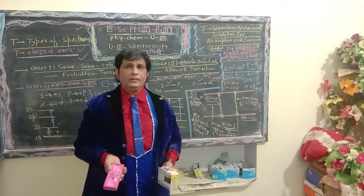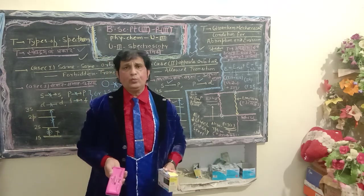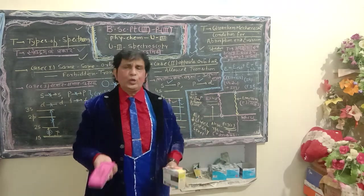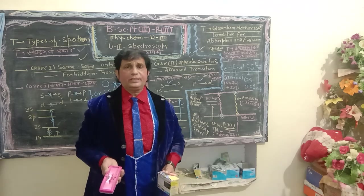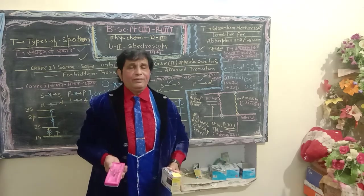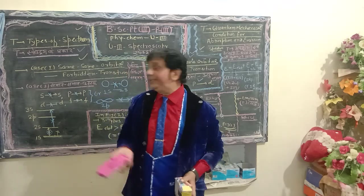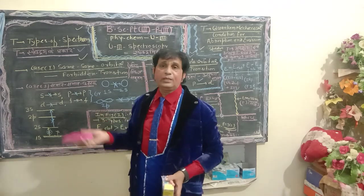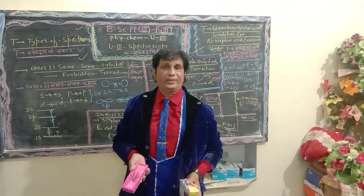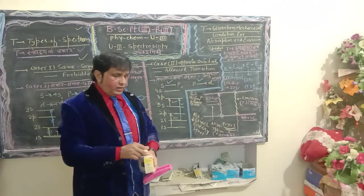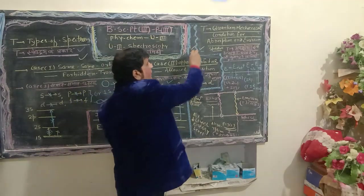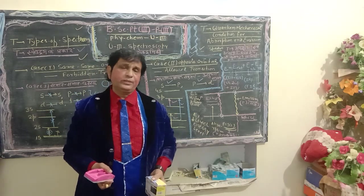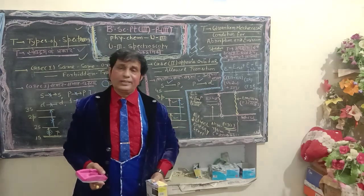Today we are discussing the selection rule for linear spectrum and molecular spectrum. Molecular spectra are also known as band spectra. A linear spectrum is produced by atomic species present in the gas or vapor phase, whereas molecular spectrum is produced by molecules present in the liquid or solution phase.